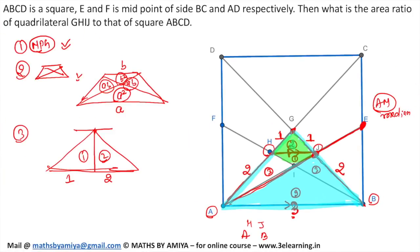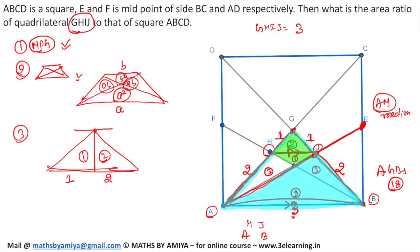So now the required area of GIJ is 3 in ratio terms. If you ask what is the area of AGB: here it is 12 and here it is 6, so total area of AGB is 18. You should know that there are 4 such triangles in the square. So the area of square ABCD is 18 into 4 = 72. If I divide 3 by 72, the answer of this question is nothing but 1 by 24.